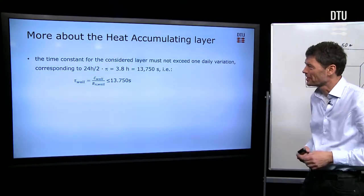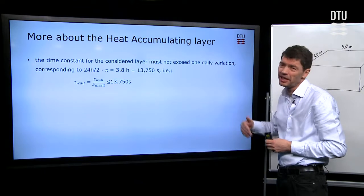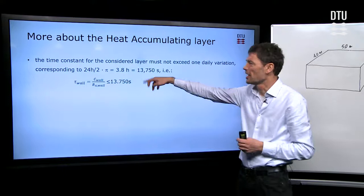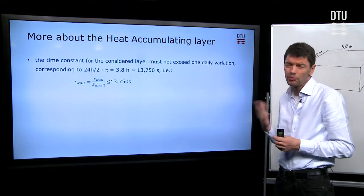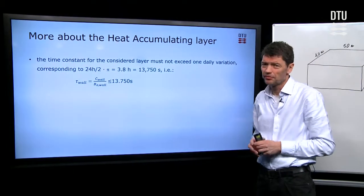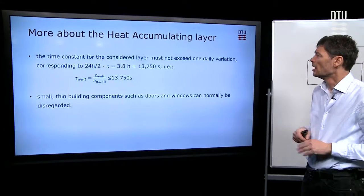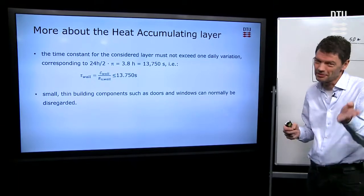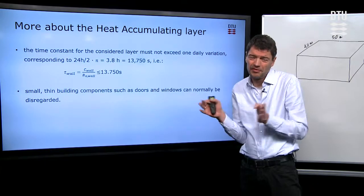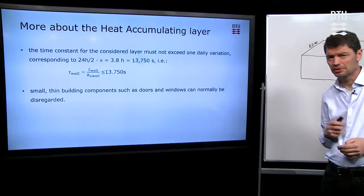And finally, two more things here. The first one, the time constant for the layer that we consider should not exceed one daily variation if we're talking, as I said before, normally about daily variations. And when we calculate that, it corresponds to having a time constant with the definition I introduced before about the percentages. It's around 13 to 14,000 seconds that you should consider at most. And then finally, you can also ask, I said furniture. You can also ask what about doors, windows, and so forth. But if things become very small, simply neglect them. They might not be important in contributing to heat capacity for the room.